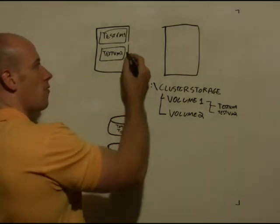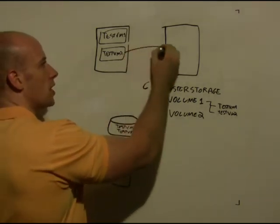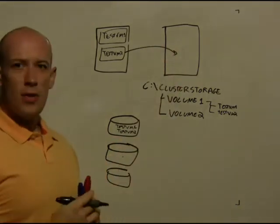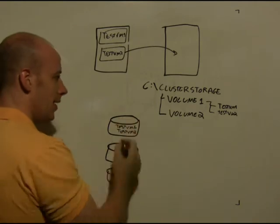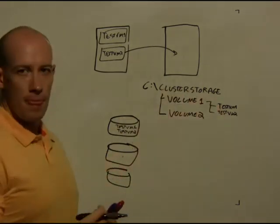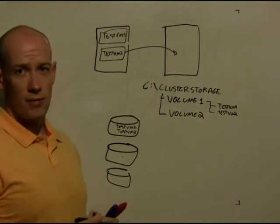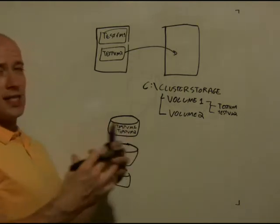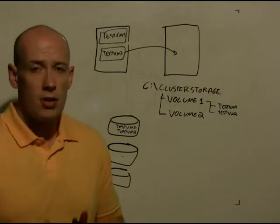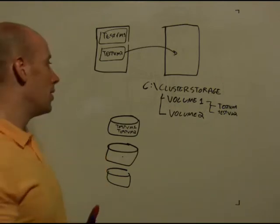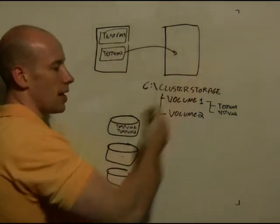If I do a live migration of testvm2 to the other node, there's no failover of the LUN. They both can actually access this LUN at the same time via this portion of the file system namespace that this CSV filter is providing this functionality. So there's no time. There's no need to move the LUN. The LUN is accessible by all the nodes in the cluster.